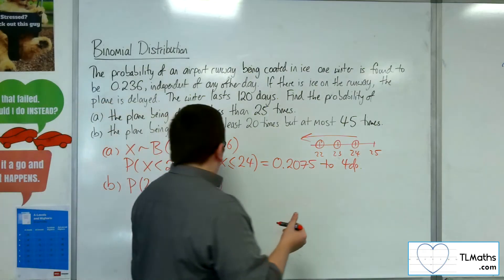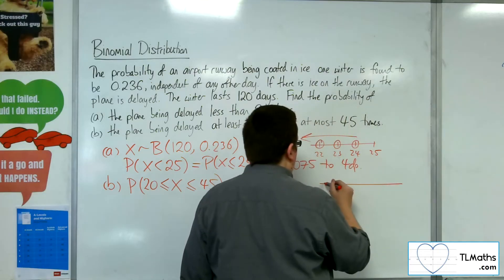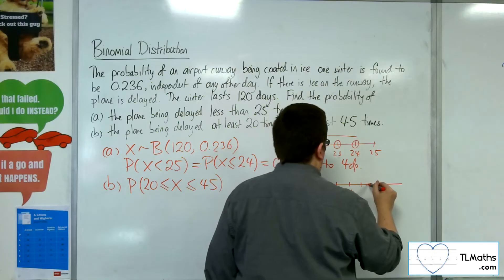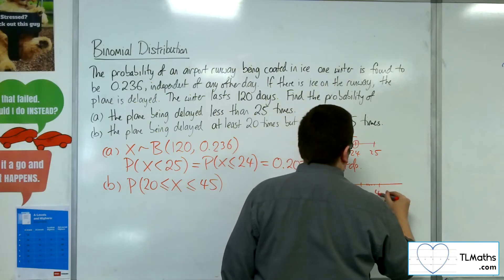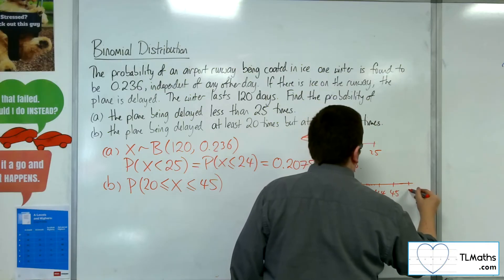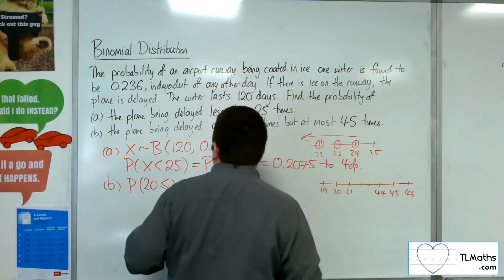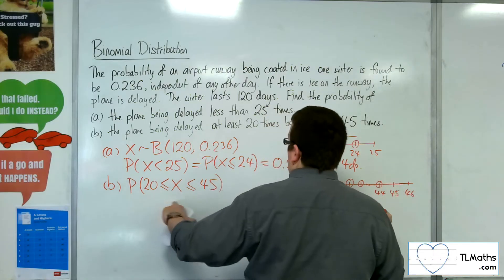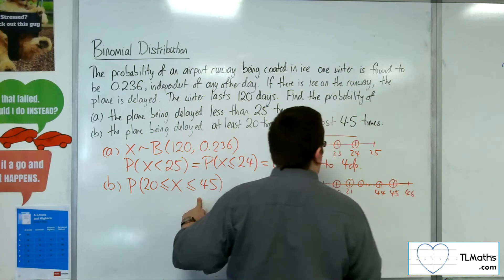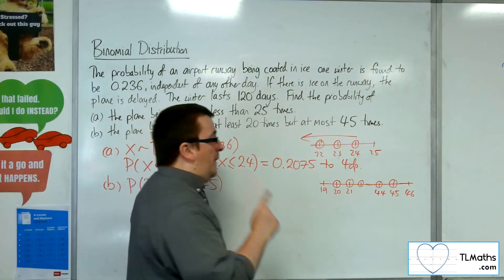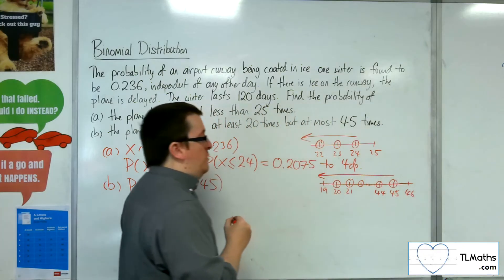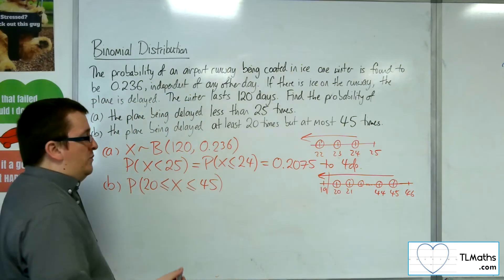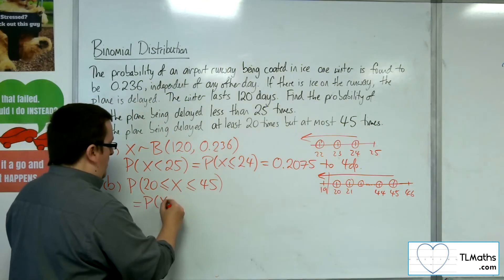Okay, so on our number line, we've got 19, 20, 21, etc. Then we've got 44, 45, 46. Okay, so we want greater than or equal to 20, so 20, 21, 22, all the way up to 44, and then less than or equal to 45, it's up to 45. Okay, so to find that, if we found less than or equal to 45, and then cut off the bit I don't want, less than or equal to 19, I can get the probability I need.